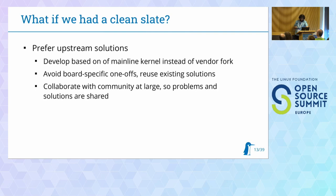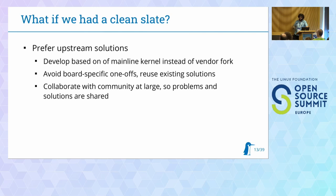Develop based on the mainline kernel instead of the vendor fork — try to use the interfaces provided by the mainline kernel and avoid board-specific one-offs. In embedded we are all special, but we share a lot of stuff, and there's no need to keep reinventing the wheel. Try to upstream that stuff — not everything at once, it's normal to have patches, but at least make them well-documented so others can work with them and your update iterations can get smaller over time. Collaborate with the community.